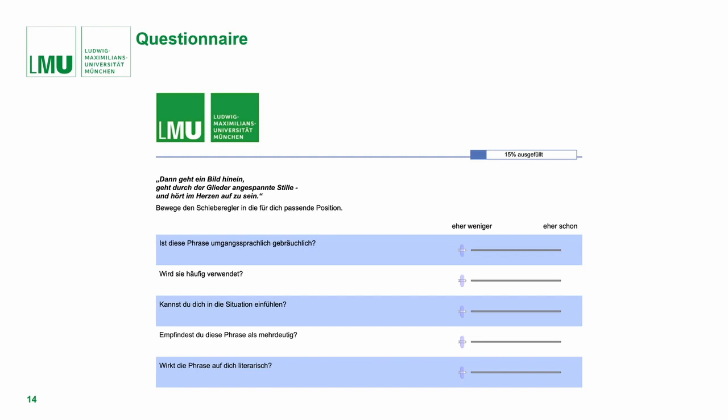Before demonstrating our results, I will come back to the questionnaire. Here you can see a screenshot of a construct and how we get our data. Participants are given a phrase to read and then use a slider to rate five items on a scale of 0 to 100. These five items ask about the common use of the phrase, its frequency of use, access to the scene, ambiguity, and its literariness.